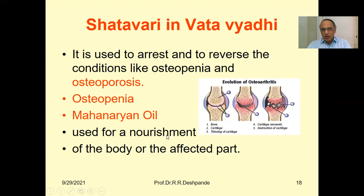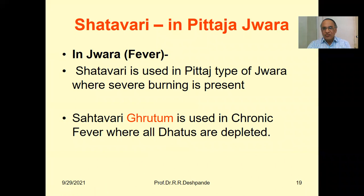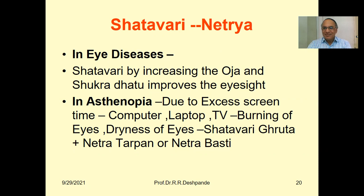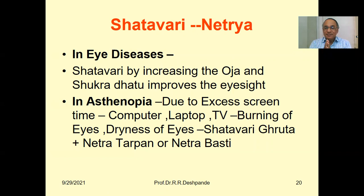Shatavari can be used in Pitta type of Jwara (fever) — whenever there is burning of the eyes, burning of the hands, and high fever. Shatavari Ghrita is used in chronic fever where all Dhatus are depleted, such as in HIV, tuberculosis, and cancer. Shatavari is also best for ophthalmic conditions: by increasing Oja and Shukra Dhatu, it improves eyesight. In asthenopia — today's common problem due to excessive screen time on computers, laptops, and mobile phones causing dry and burning eyes — Shatavari is the best, in addition to external management with Netra Tarpana or Netra Basti.